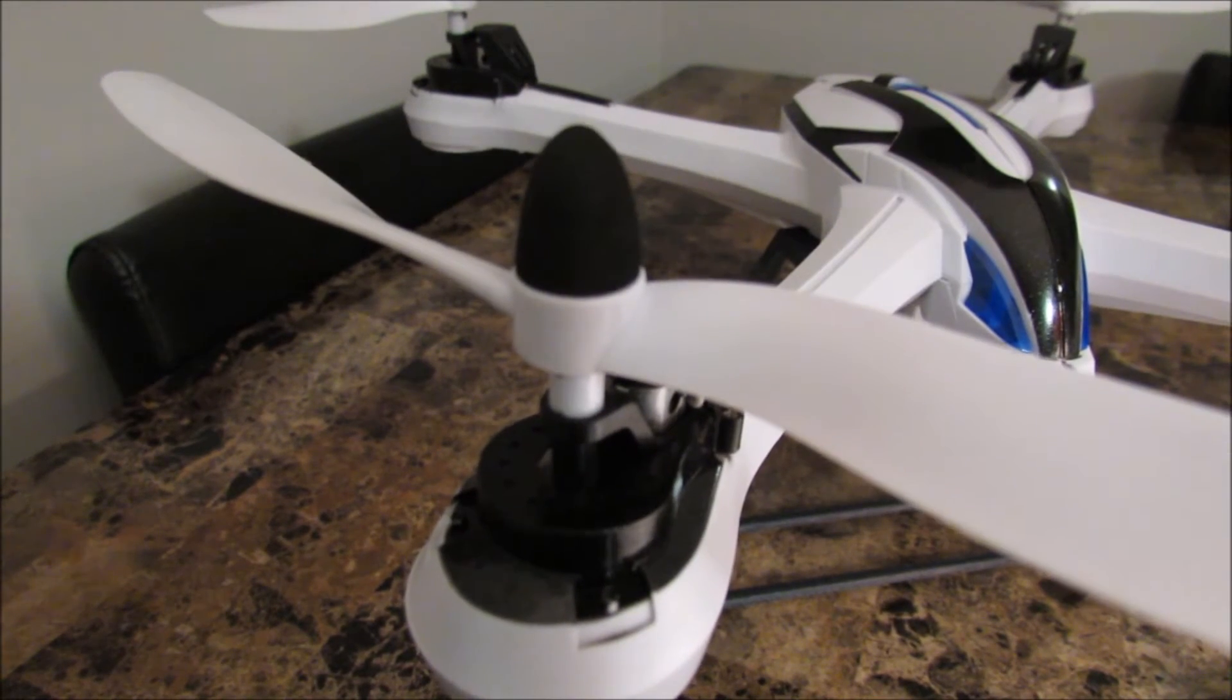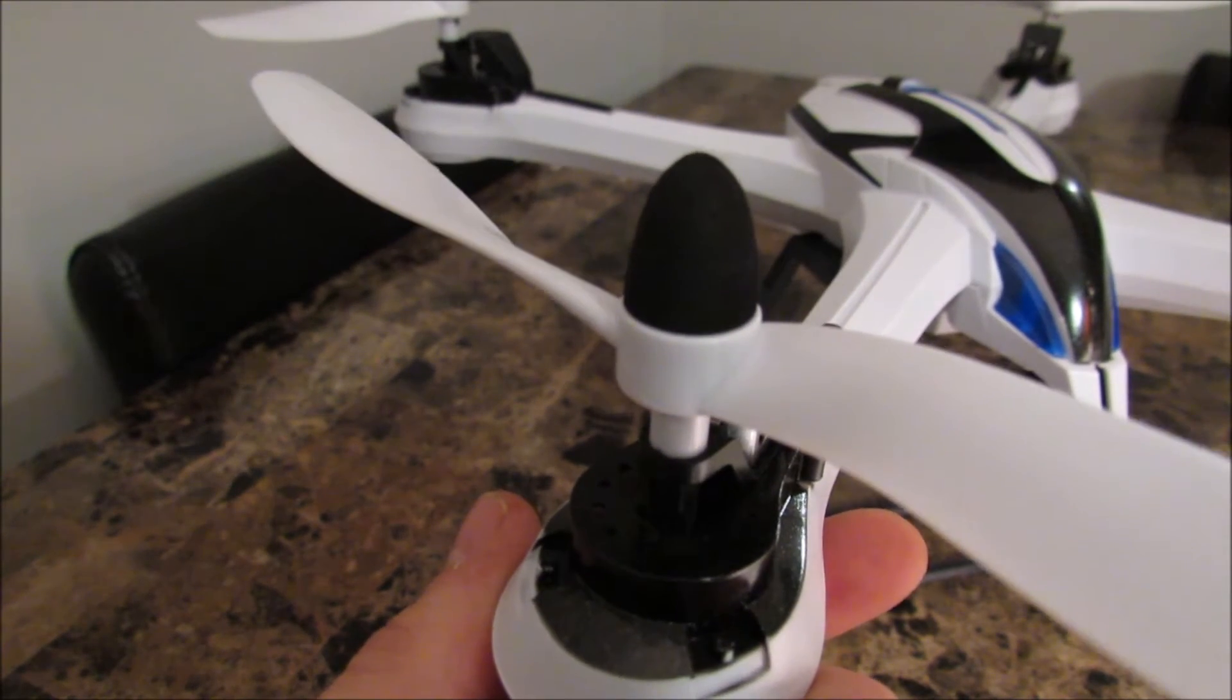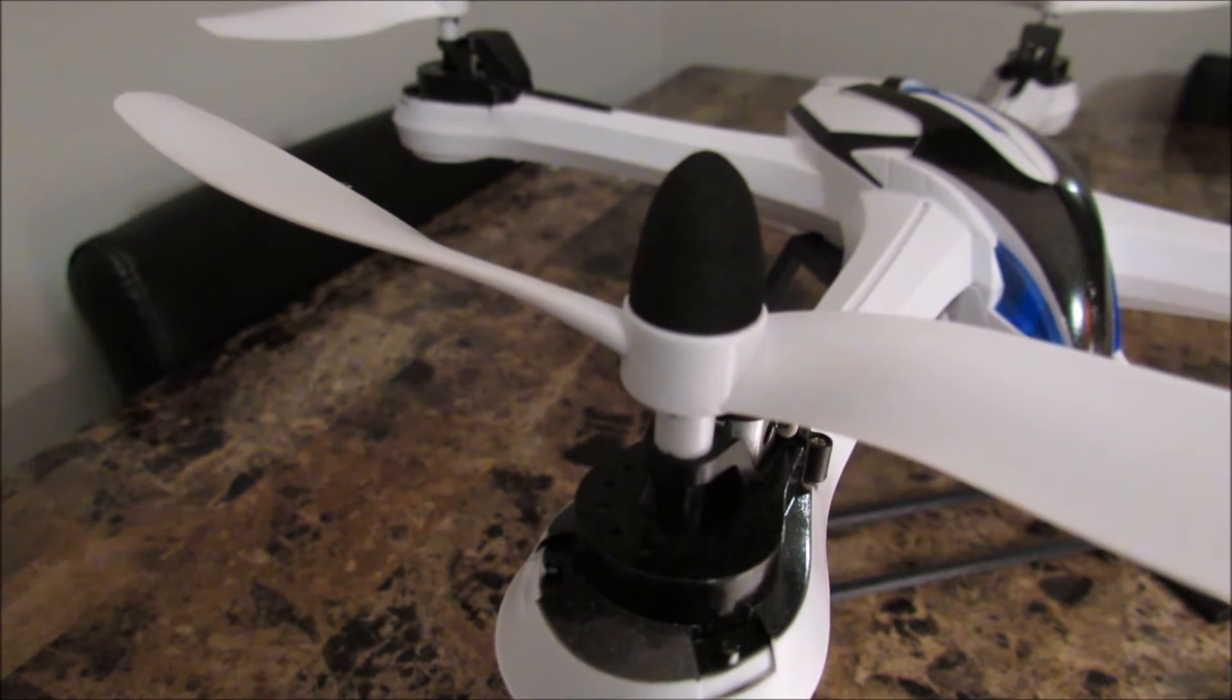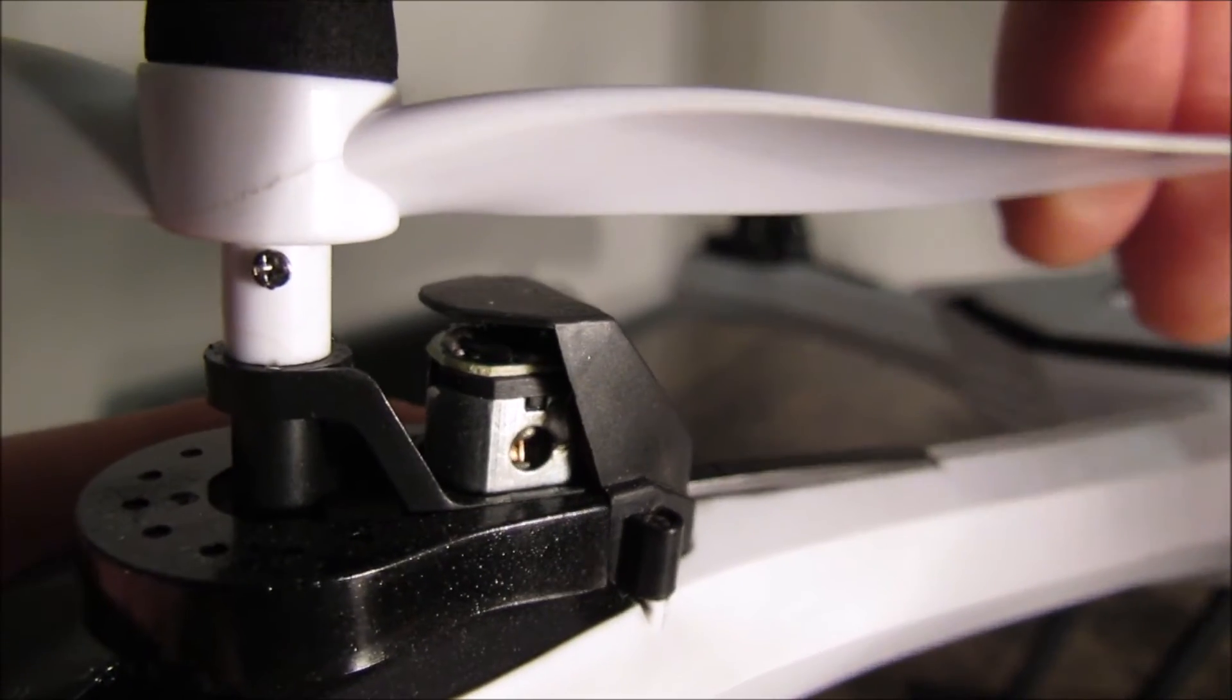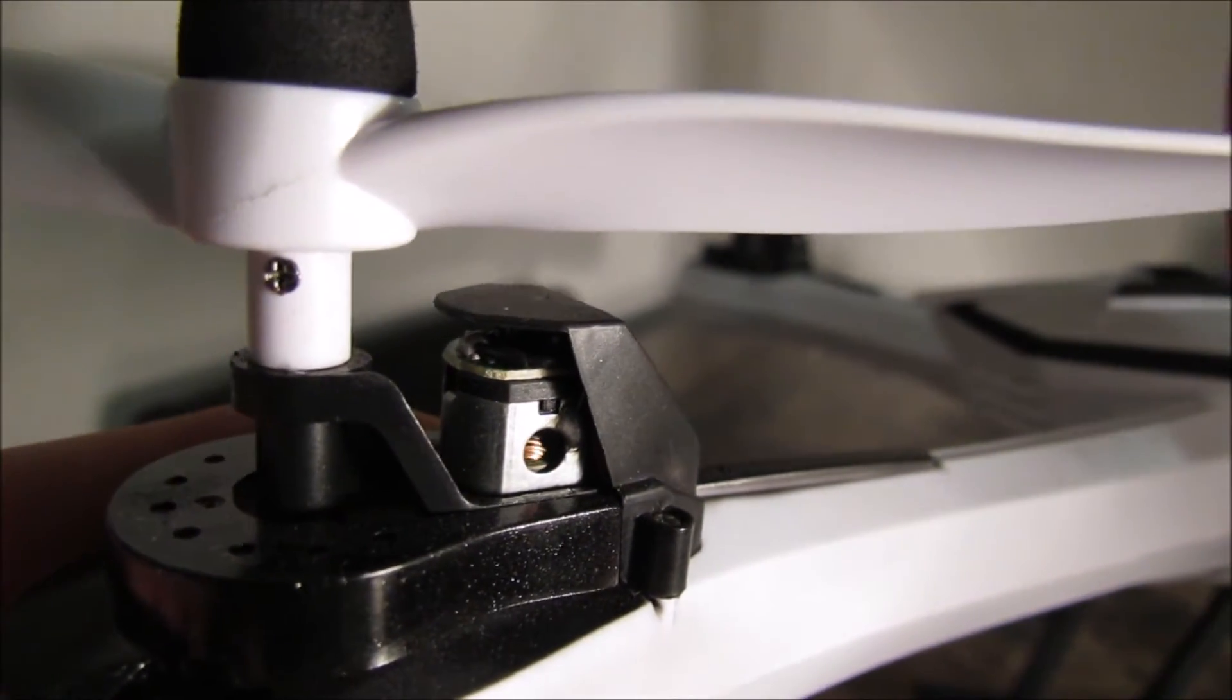But it is what you can't see that is the problem, and that is caused by aggressive flying and flips. With the Tarantula and other large quadcopters with brushed motors, when you rotate the blades and feel that click, it is not actually the gears but the post in the motor resting in a magnetic pocket.